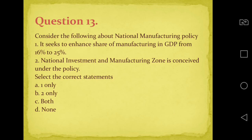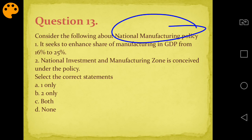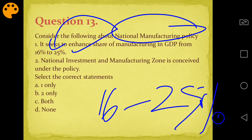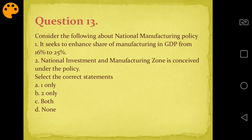Question thirteen: National Manufacturing Policy - which statements are correct? Statement one: it seeks to enhance share of manufacturing in GDP from 16% to 25%. Statement two: it envisages setting up National Investment Manufacturing Zones (NIMZ). Answer is C - both statements are correct. Manufacturing share target is 16% to 25% of GDP, and NIMZ creation is also part of the policy.